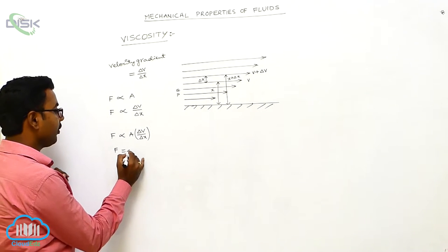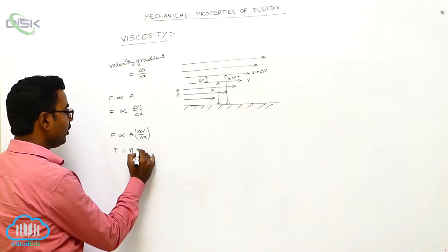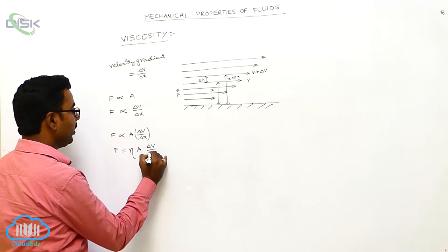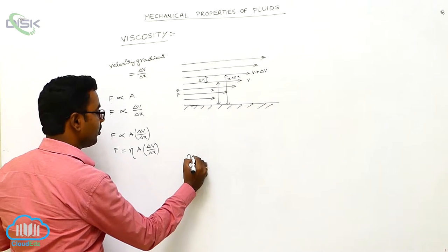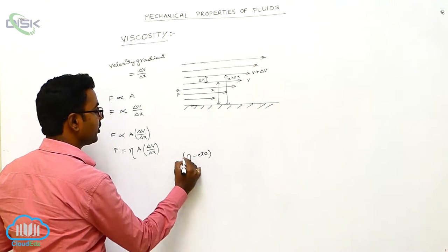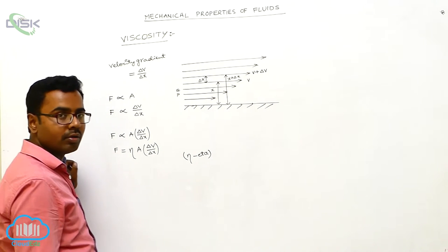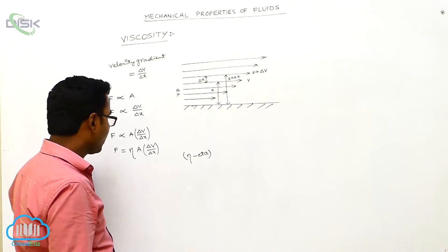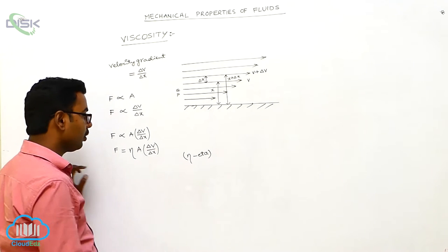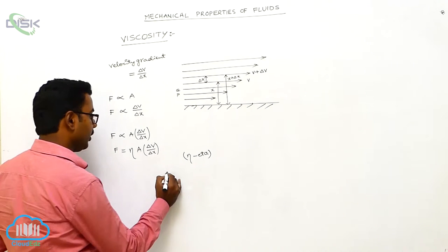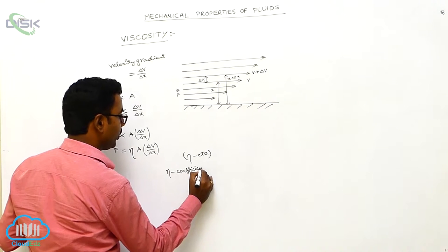Removing the proportionality sign, we introduce a constant eta: F = η × A × (ΔV/ΔX). Here eta (η) is the proportionality constant, which is called the coefficient of viscosity.